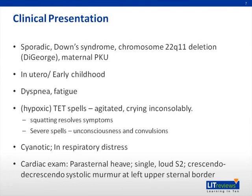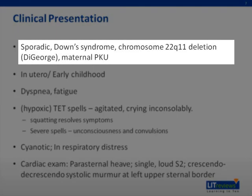Although TOF typically occurs sporadically, it may present as part of a congenital syndrome, such as Down's or DiGeorge. A slight increase in recurrence among siblings has also been noted. Maternal phenylketonuria has also been identified as a risk factor for TOF.